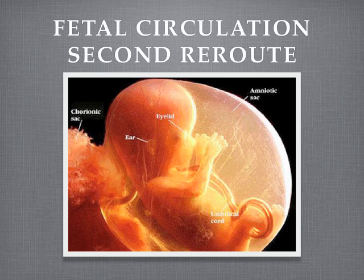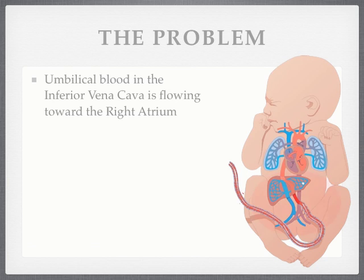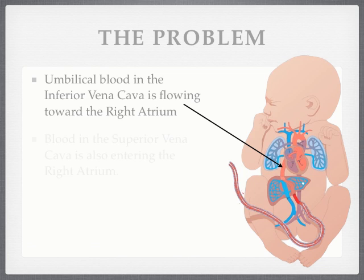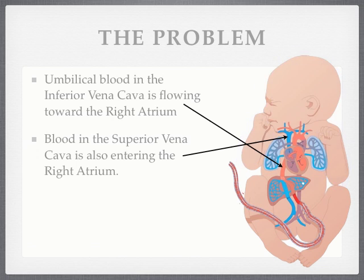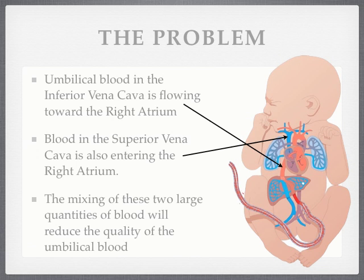Now let's describe our second reroute. There's a second place where blood is going to take an abnormal direction, but for the benefit of fetal circulation. The umbilical blood in the inferior vena cava — which bypassed the liver via the ductus venosus — is flowing toward the right atrium. But at the same time, a very large quantity of blood is flowing down to the right atrium as well: all the superior vena cava blood, coming from the head, shoulders, and arms. The mixing of these two large quantities of blood in the right atrium could decrease the quality of the umbilical blood so that it becomes so dilute it's not much good for anything.